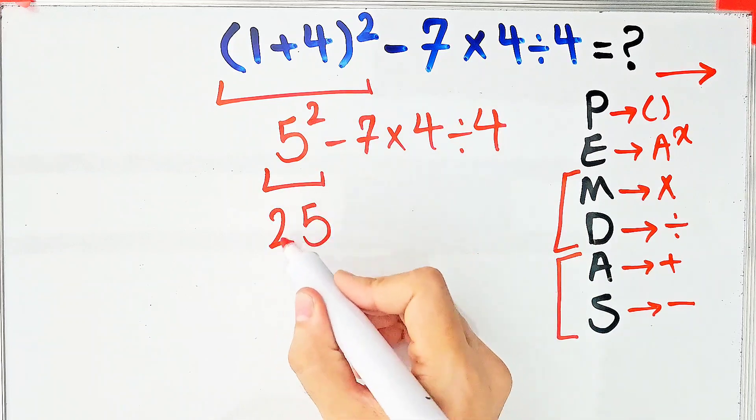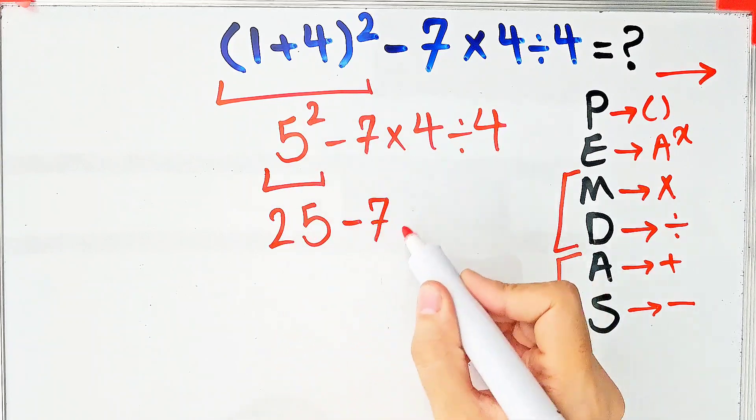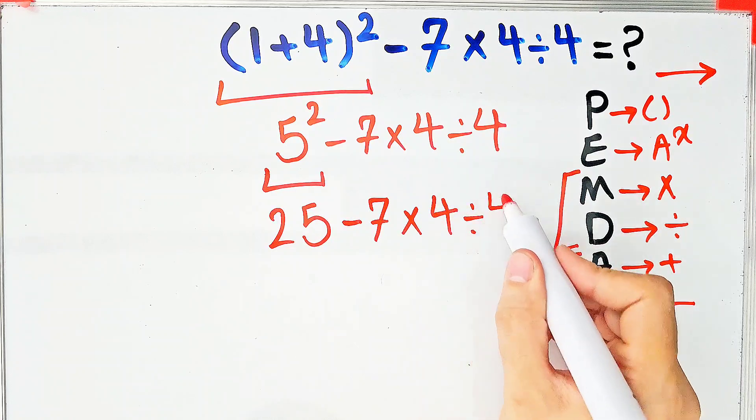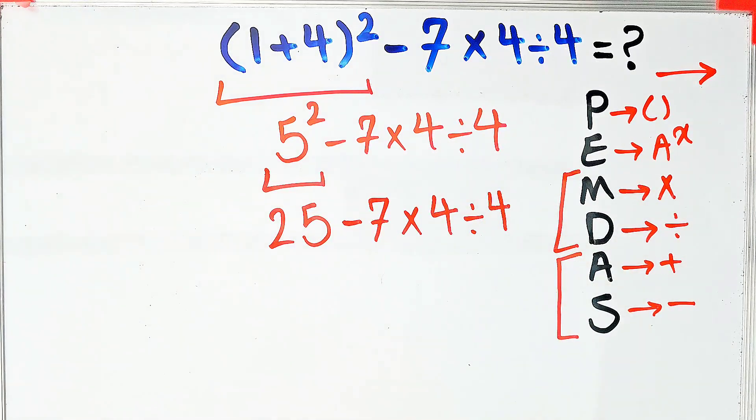Now we have subtraction, multiplication and division. Seven times four equals 28. Now we have 25 minus 28 then divided by four.